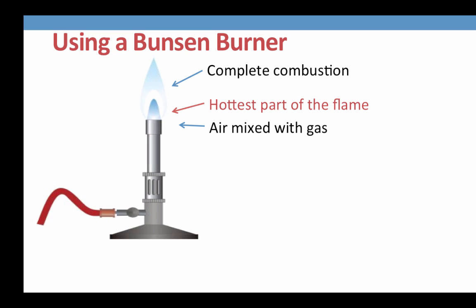As you can see in the diagram here, a properly adjusted Bunsen burner will display two flames, an outer flame of blue and an inner blue flame. The hottest part of the flame is at the upper tip of the inner blue flame.